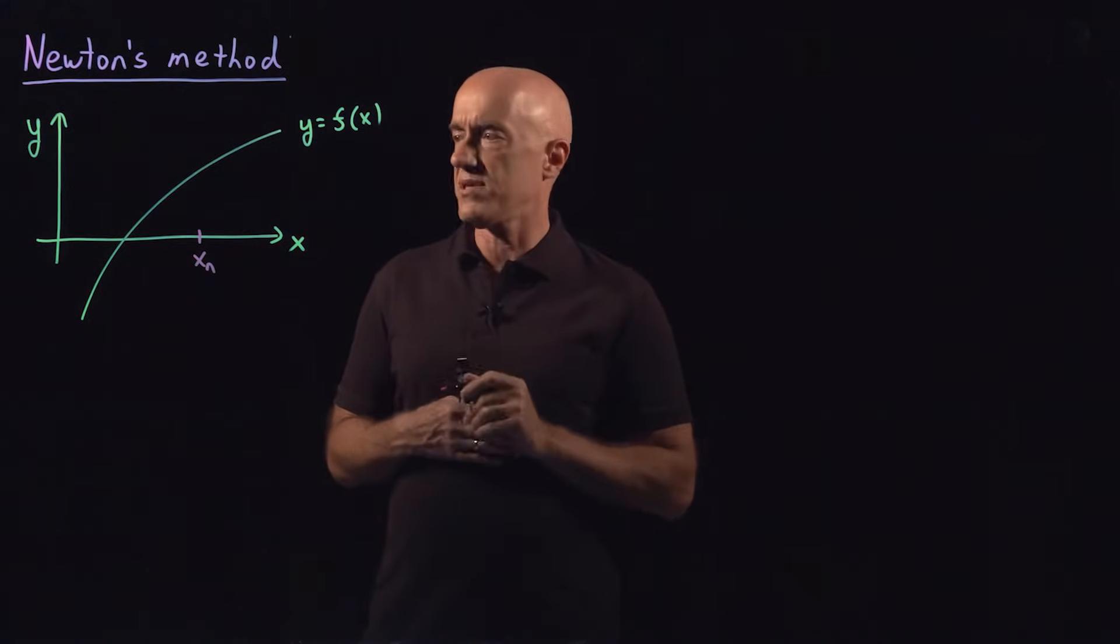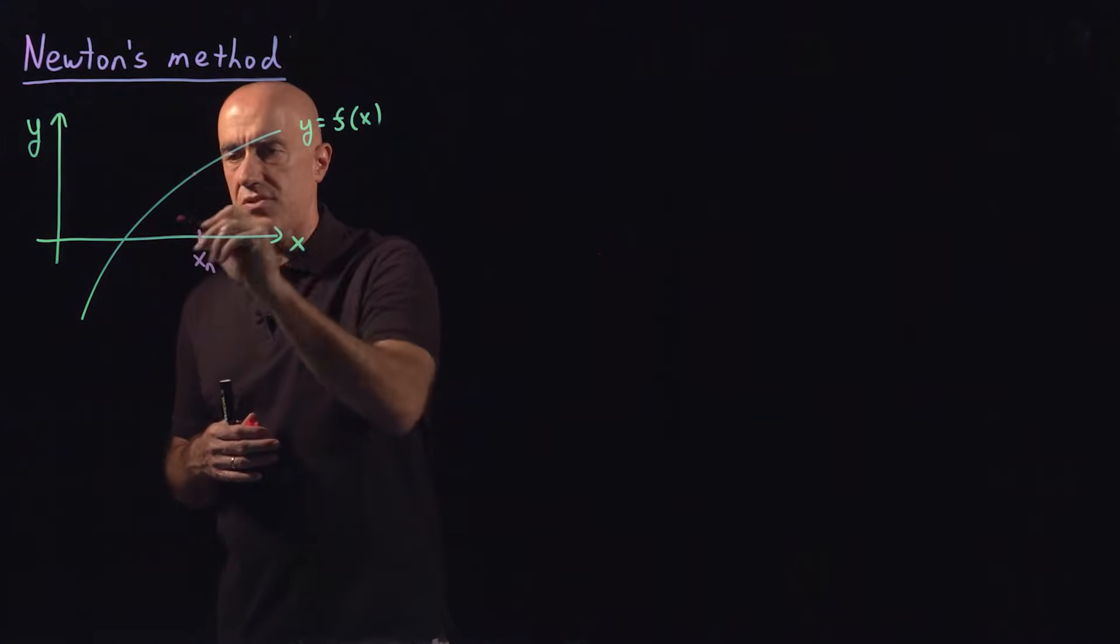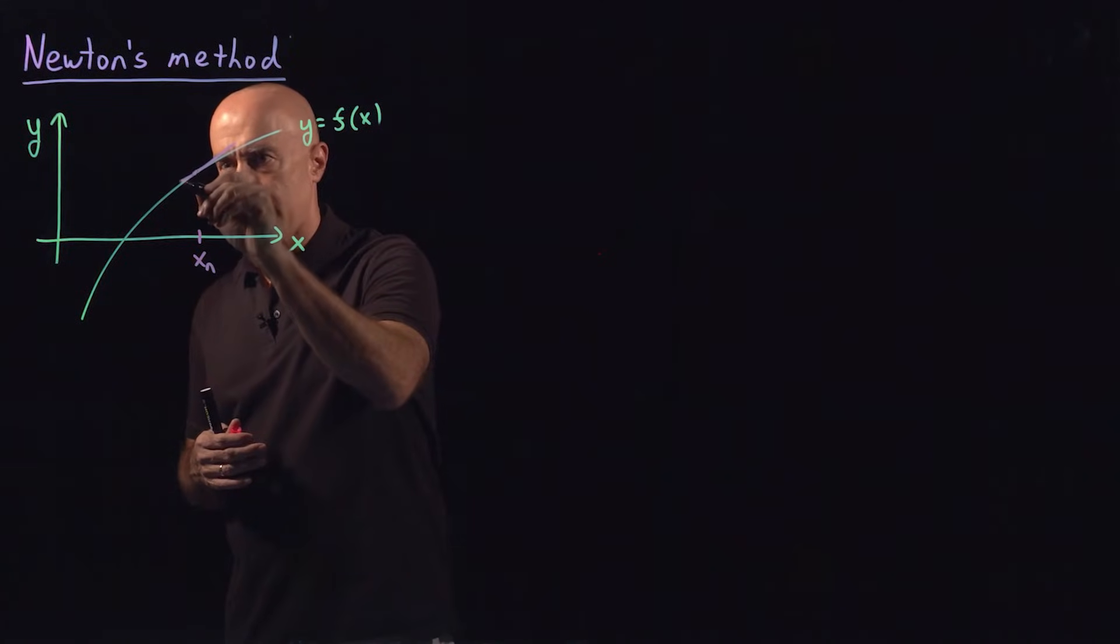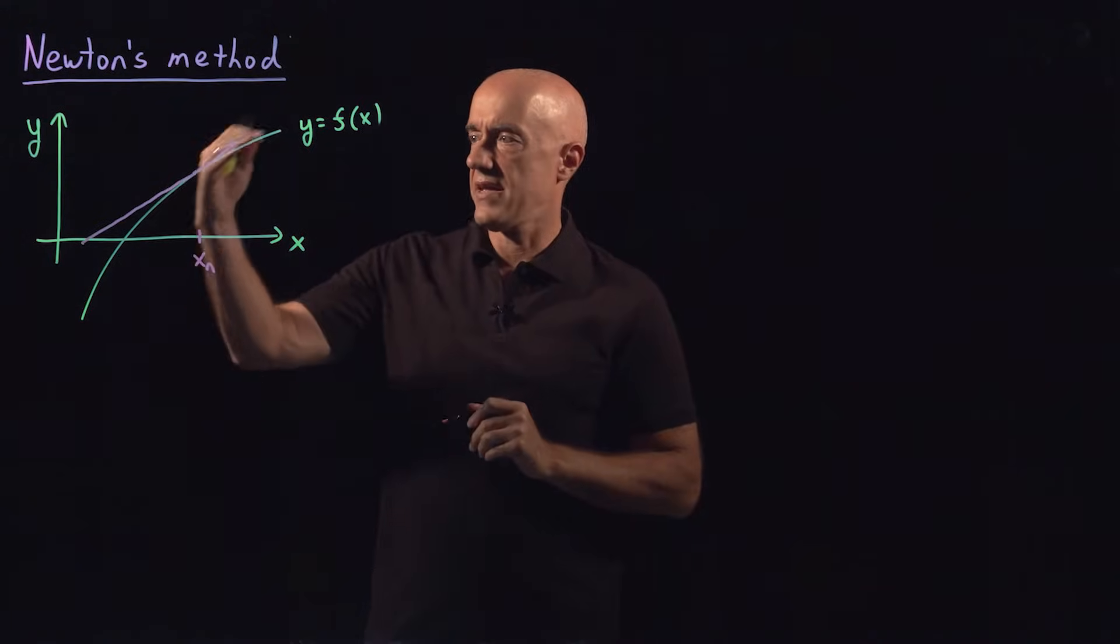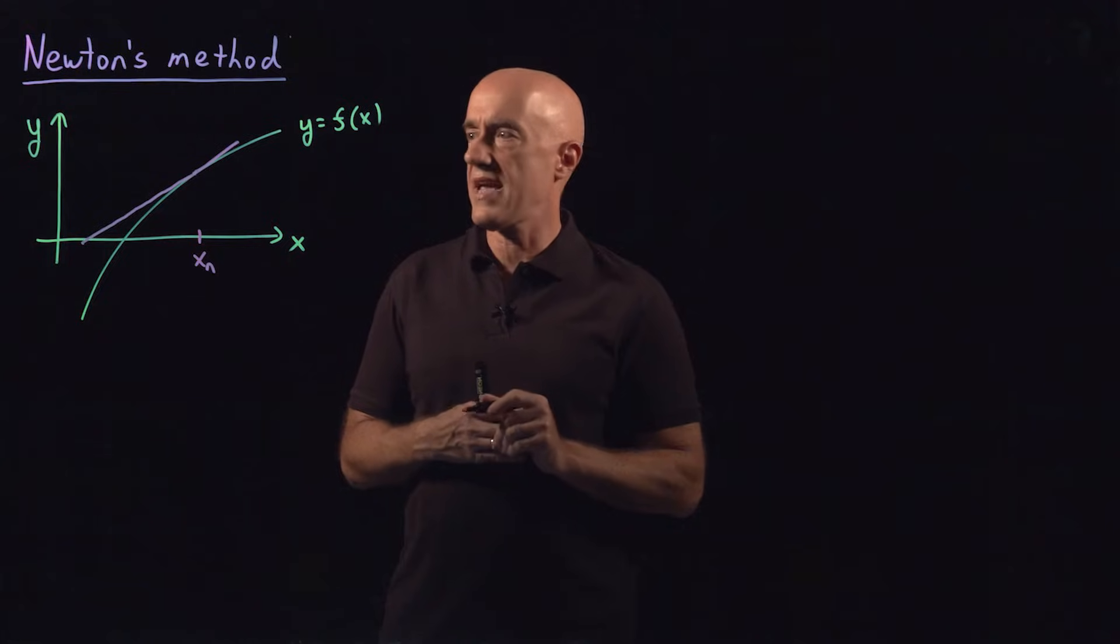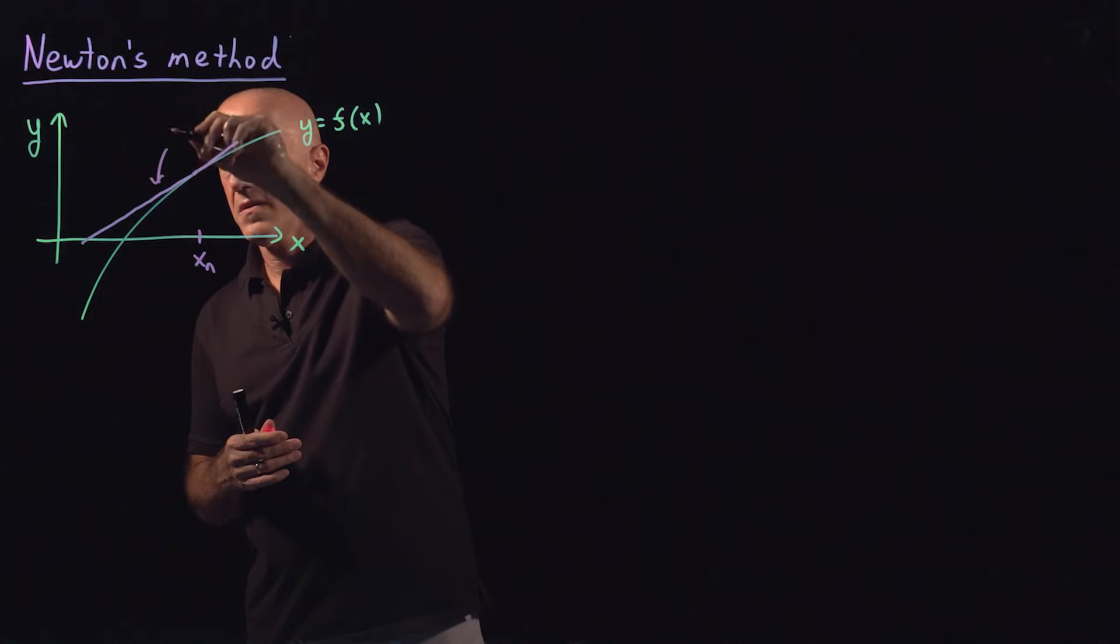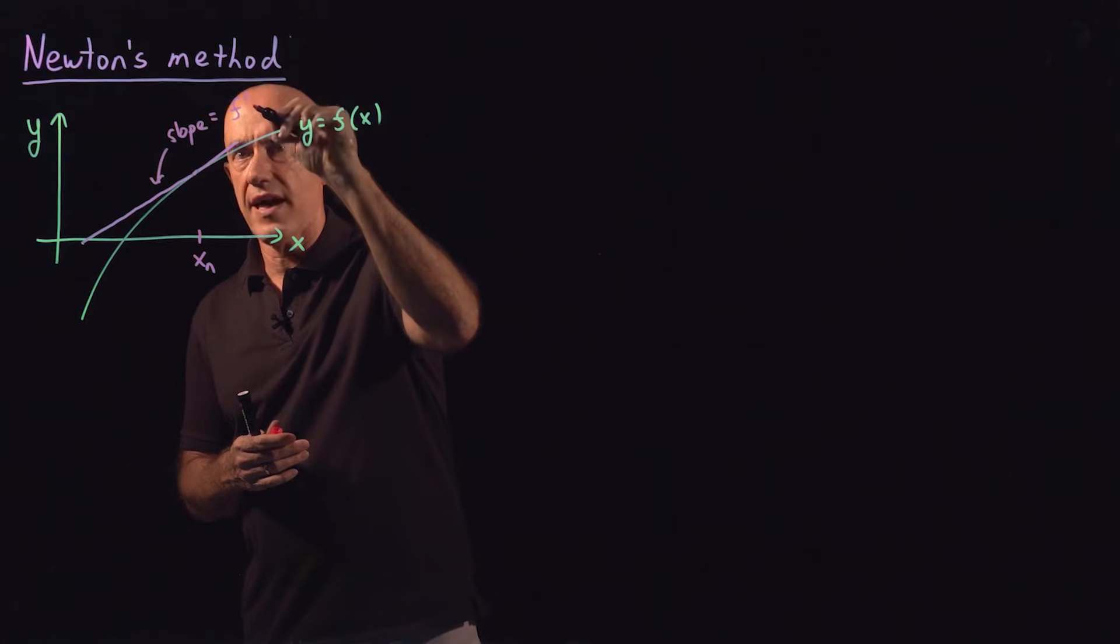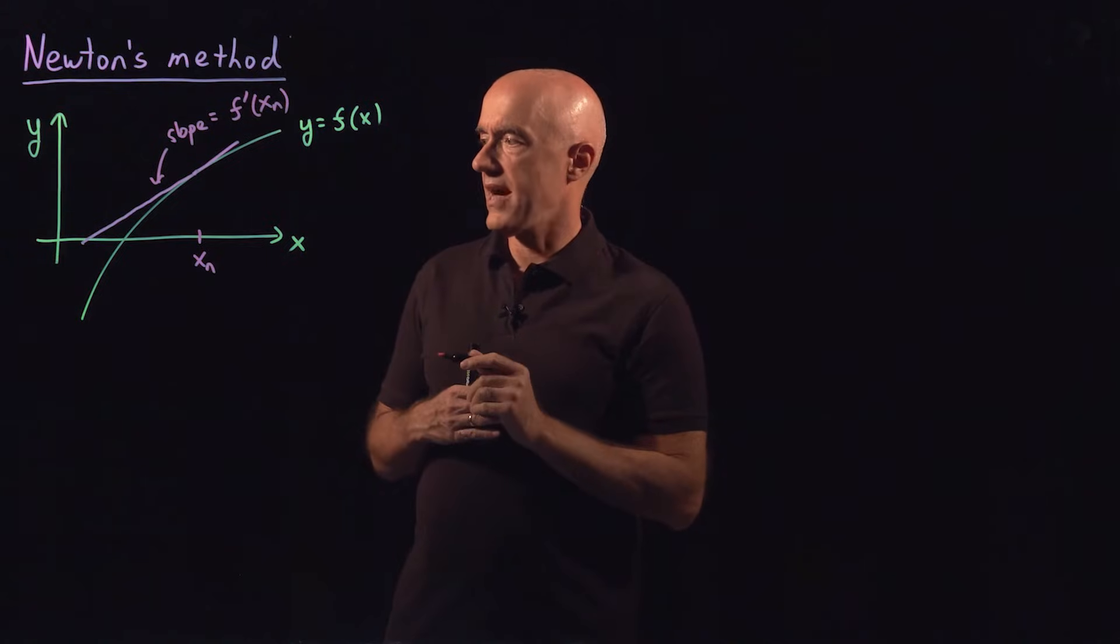How do you find x_{n+1}? Well in Newton's method, you draw the tangent line to the curve at x equals x_n. So if I can try to sketch the tangent here, it should look something like that. That I would say is the tangent line. You find the tangent line from calculus. The slope of this line is equal to the derivative of f evaluated at x_n. Newton's calculus.